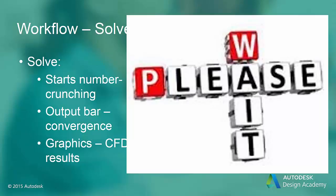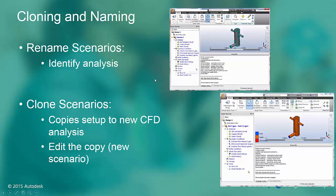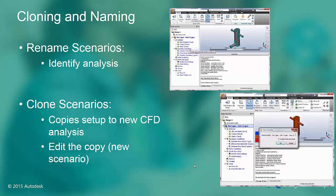We are now ready to solve this analysis. However, before we hit the solve button, let's set up more of the design study. When all of the scenarios and designs have been added to the design study, we can queue up the solve processes for each of them. Each CFD analysis in the design study is called a scenario. These scenarios can be renamed and cloned. Renaming allows you to name the CFD analysis with something identifiable for future reference. Cloning allows you to copy the CFD analysis into a new analysis and change a design parameter to understand the effect this parameter may have on the performance or design.